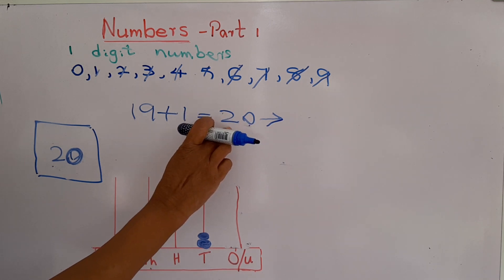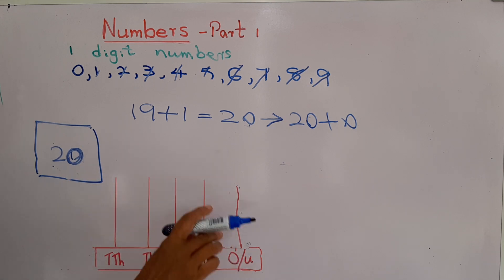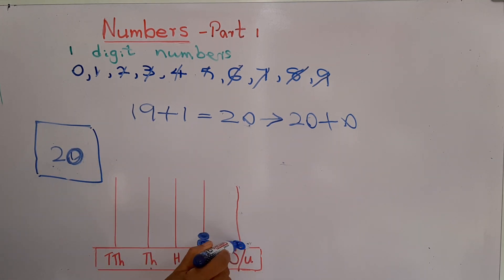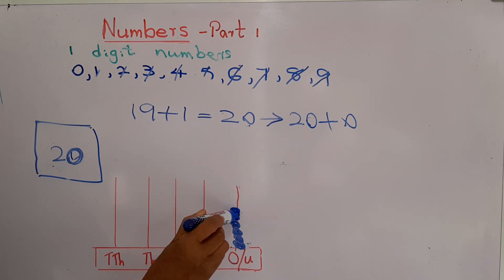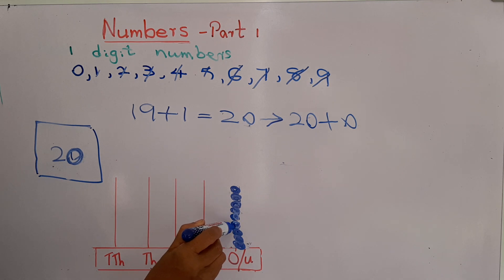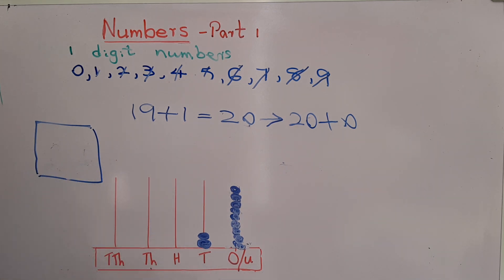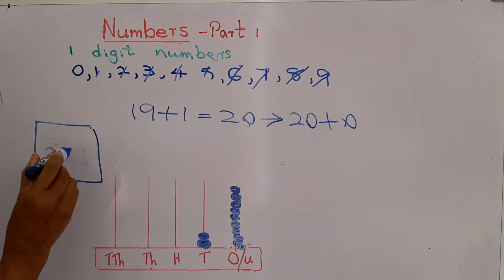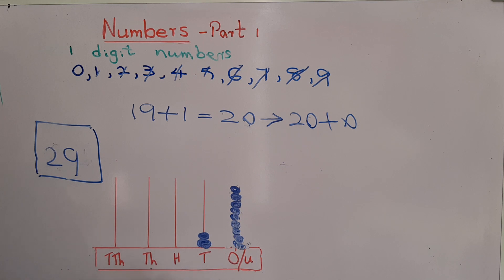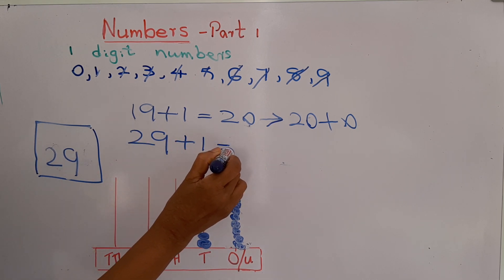Here is the ones place and the tens place. How many are in the tens place? 2. Two tens means 20, and 0 ones. Then we add another 9 rings: 1, 2, 3, 4, 5, 6, 7, 8, 9. Do maths as a hobby — you will enjoy this lesson! Now, how many tens are there? 2 tens. How many ones? 9 ones. The number represented by this abacus is 29. If we add another 1 to 29, the number will be 30.